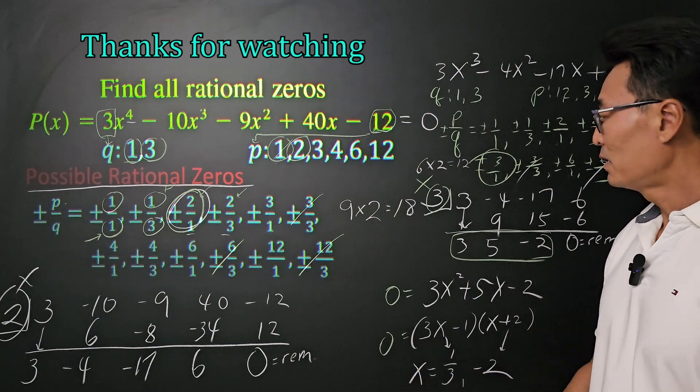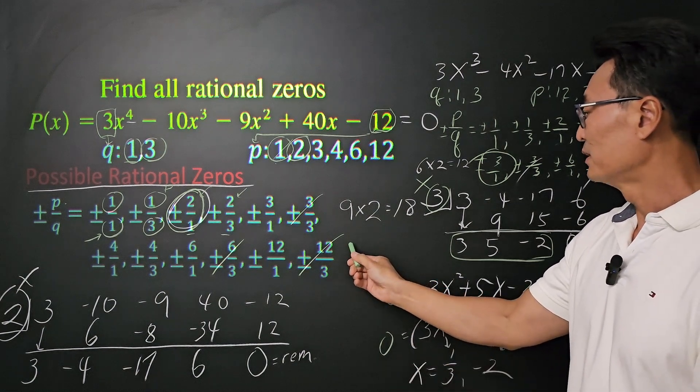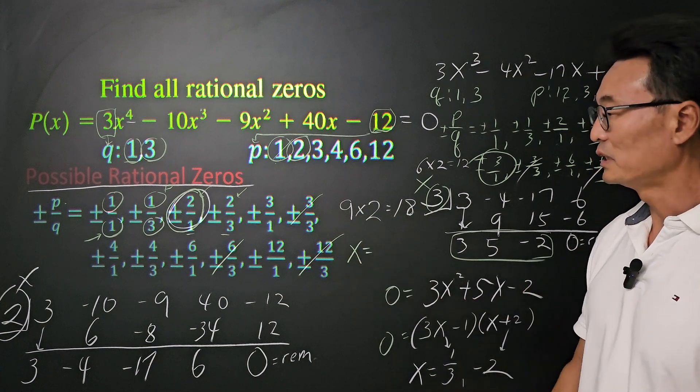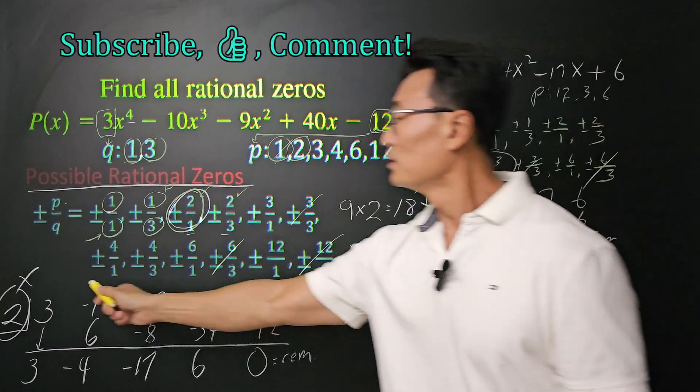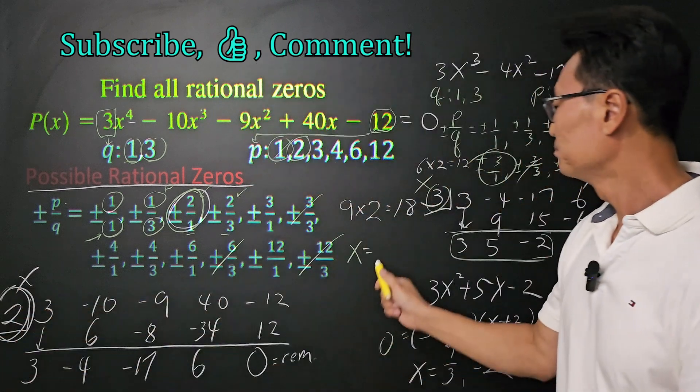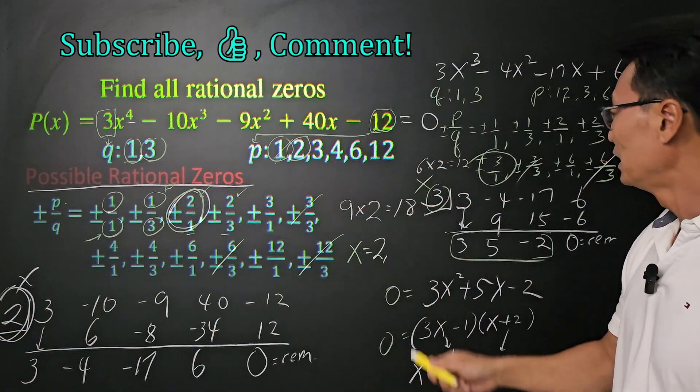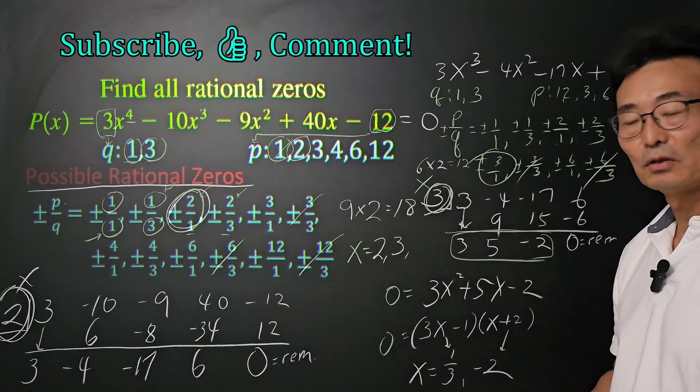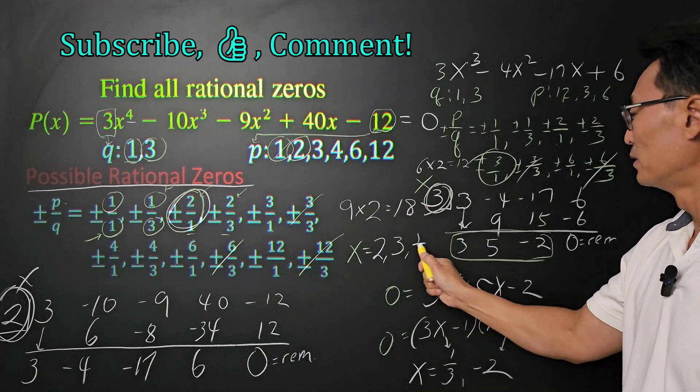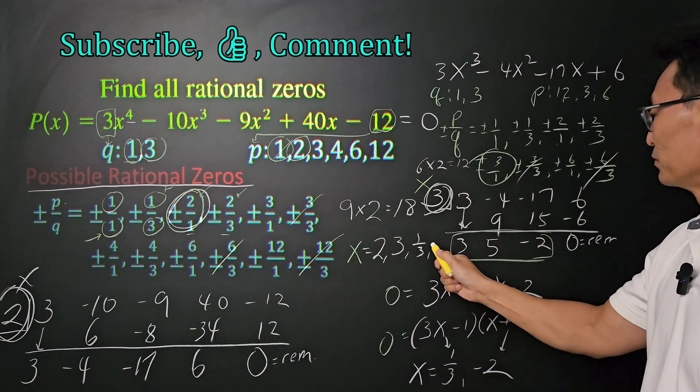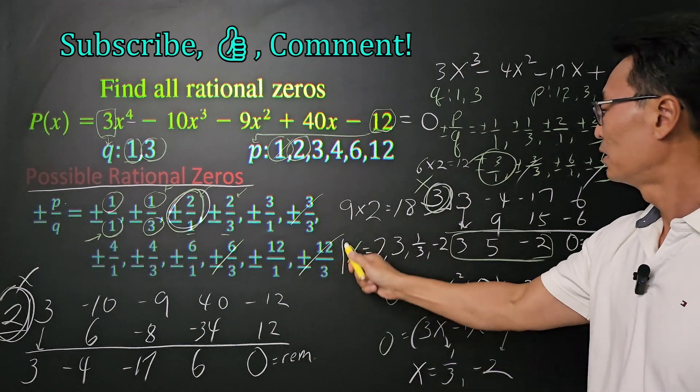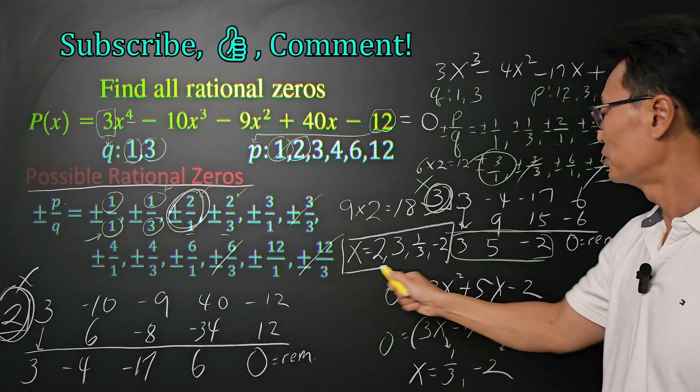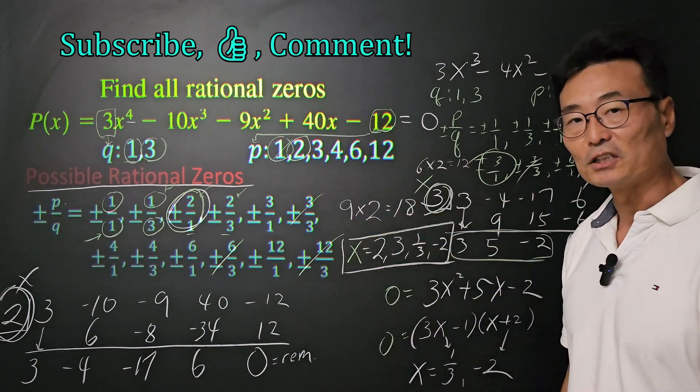All right, we're done. Here are the values of x then. x will equal to the 2 that we found in the beginning, or the 3 that we found from the second synthetic division, or the 1 third, or the negative 2. So, here are all the zeros of that function.